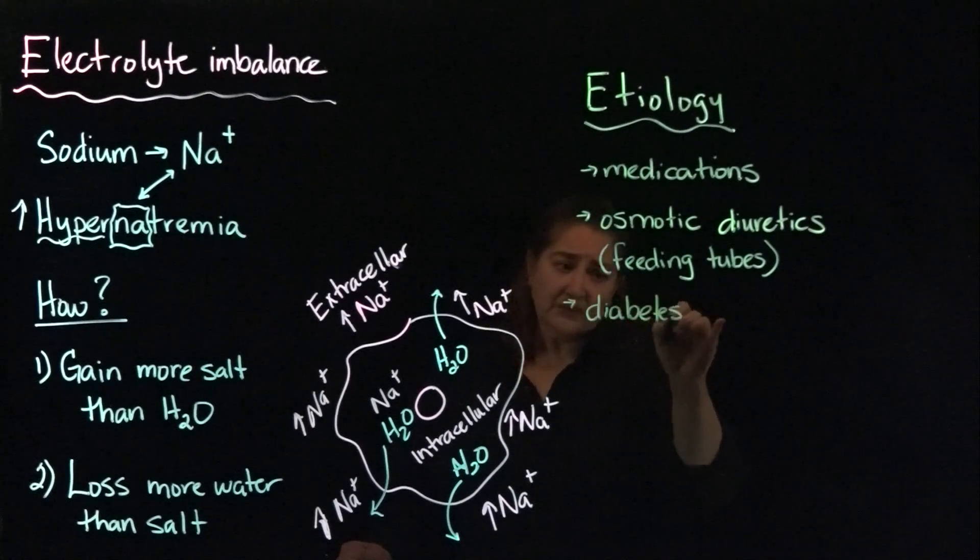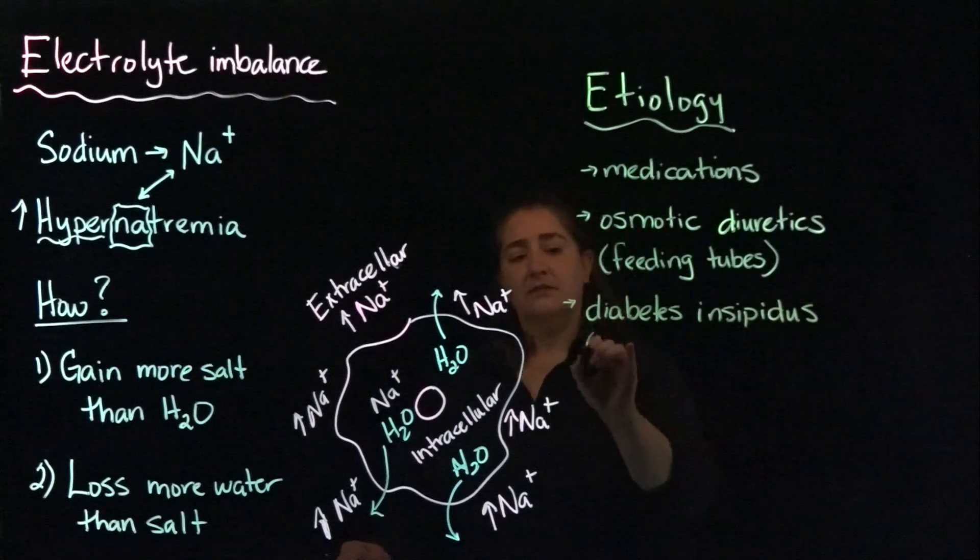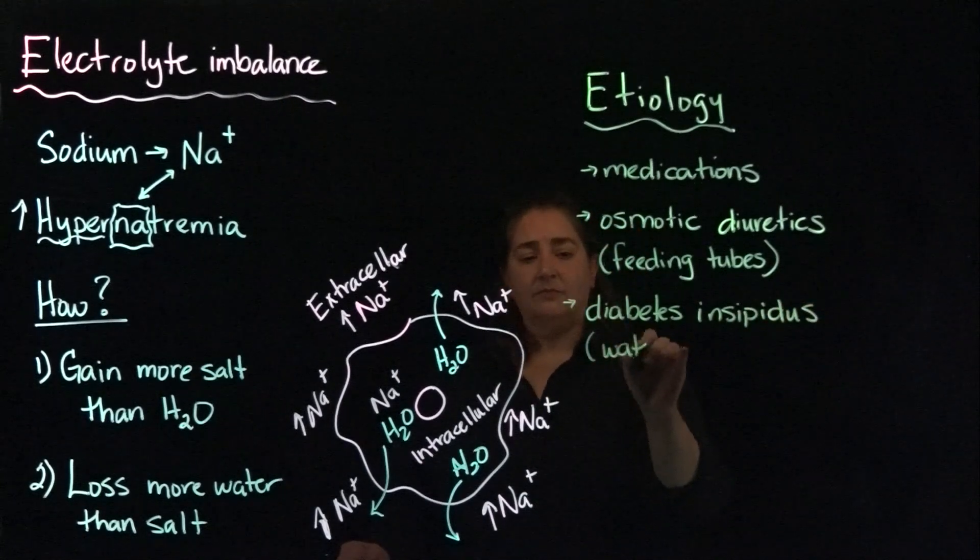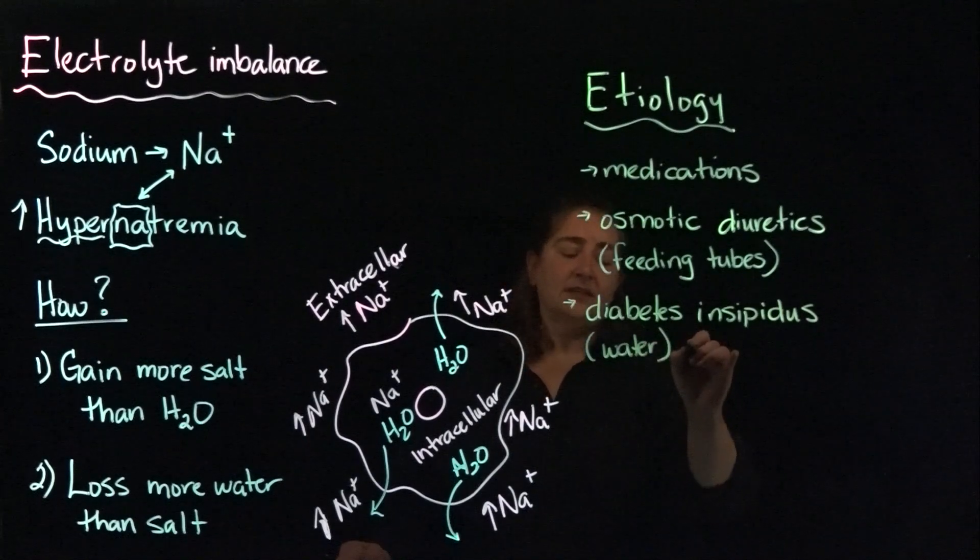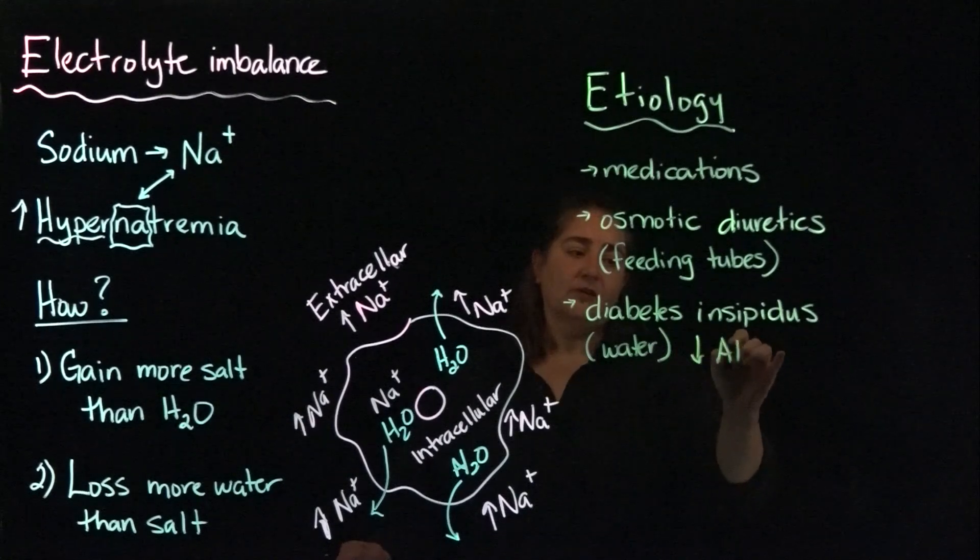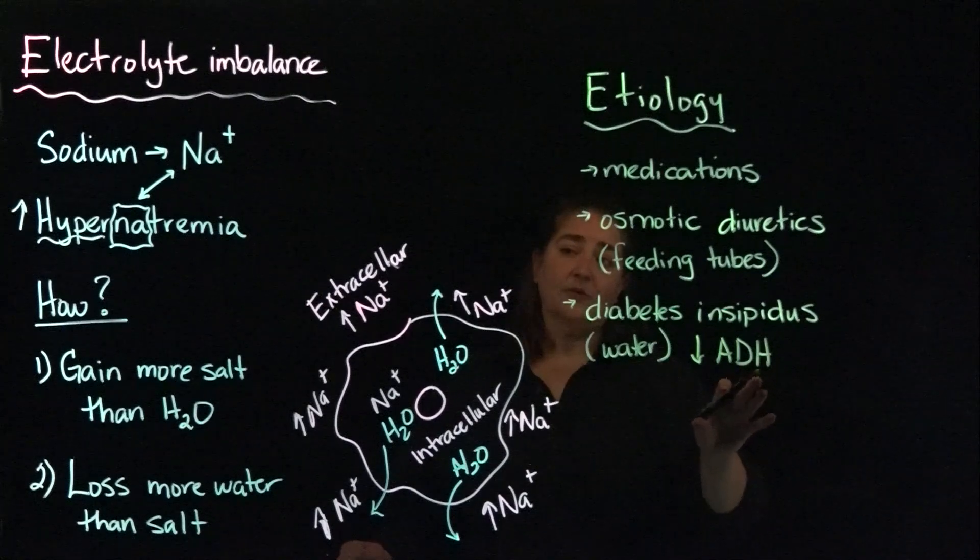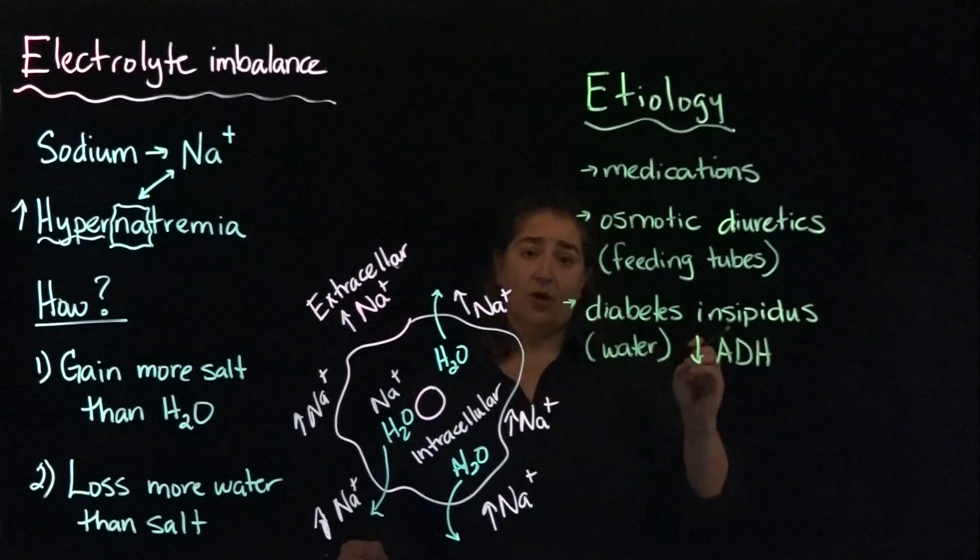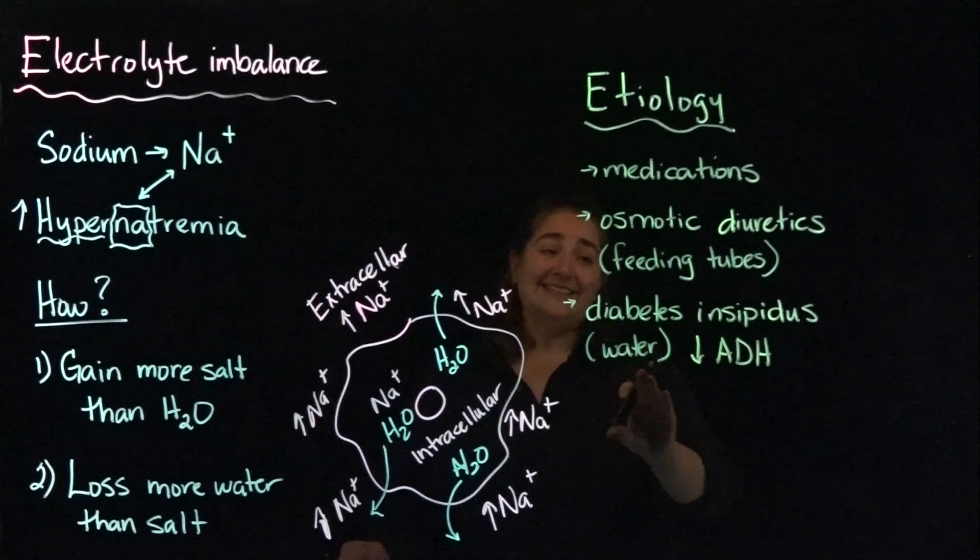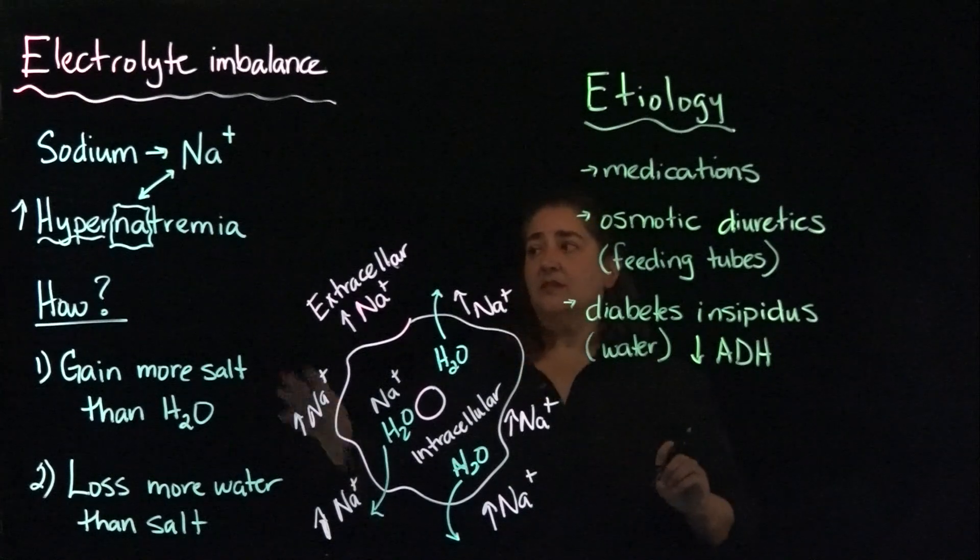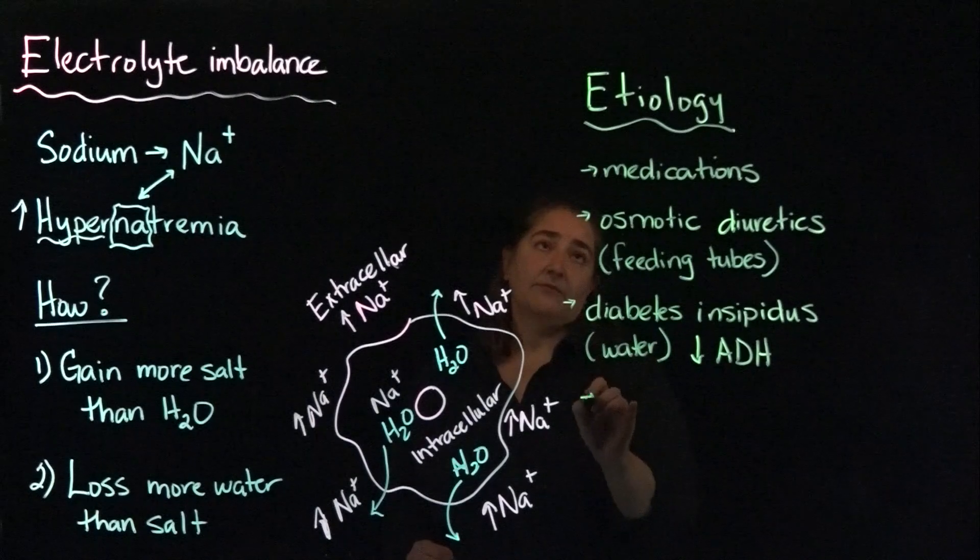Another one is diabetes insipidus. This is more familiarly referred to as water diabetes. This is a result of low levels of antidiuretic hormone. Remember, antidiuretic hormone is responsible for pulling water back out of the nephron. So individuals with diabetes insipidus could be prone to hypernatremia if they're not intaking enough fluids.